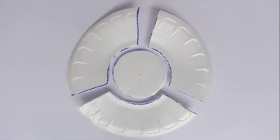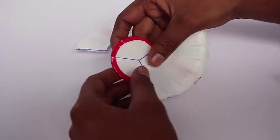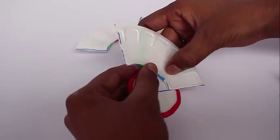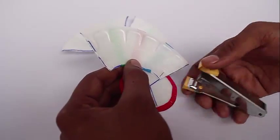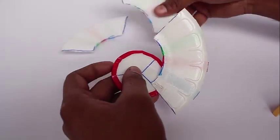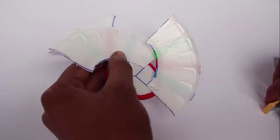After having cut all the pieces, tape the edges of the circle with red tape and then staple all the three sectors to the circle as shown. The three sectors will make the blades of the spinner.